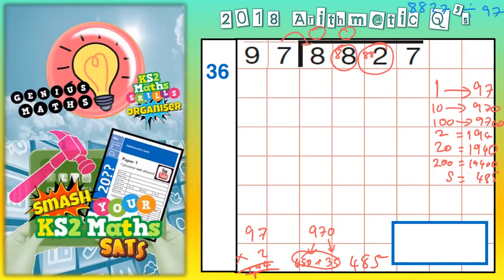Once you've got that far, you can then just say, well, a chunk of 5, I can make 10 times bigger by adding a 0. So that would be 4850.